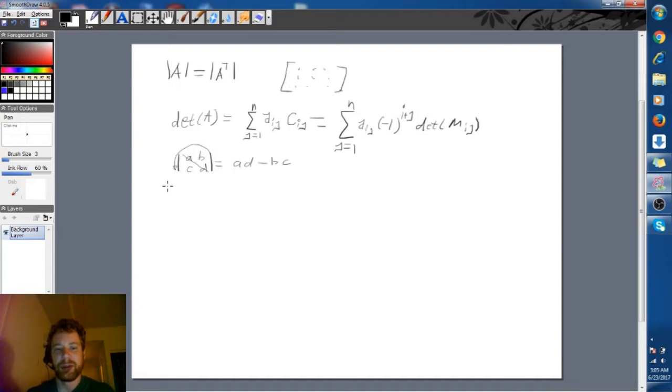So A transpose is just going to equal A, D on the diagonal - these guys stay the same - but these switch to B, C. And this is of course the same thing: A, D minus C, B, but that's invariant under commutation. So they're the same thing, and this is sort of a pseudo-geometric argument as to why the determinant equals the transpose determinant.